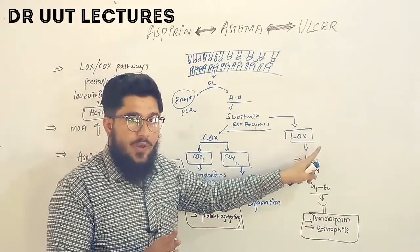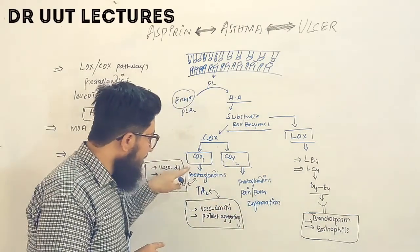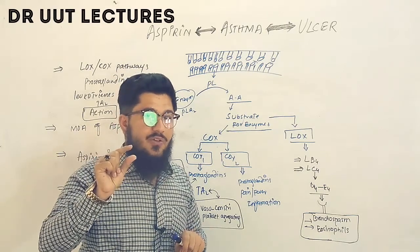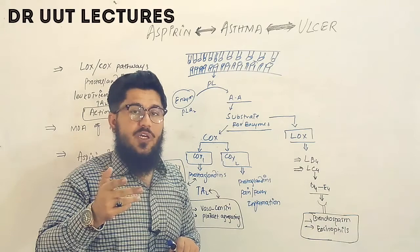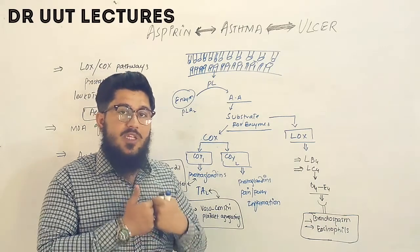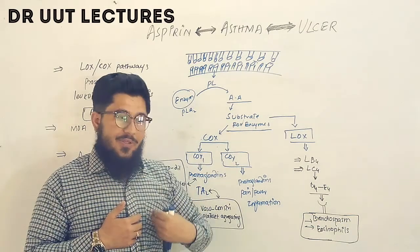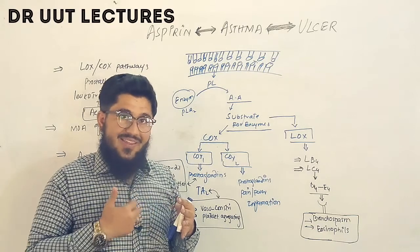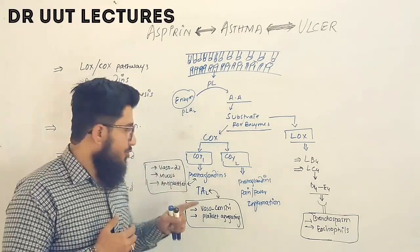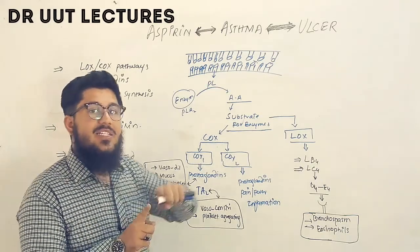The prostaglandins produced through COX-1 are responsible for renal vasodilation, improving blood perfusion to the kidneys. They also stimulate mucus secretion in the GI tract — particularly in the stomach — where this mucus forms a protective barrier against acid. Additionally, COX-1 prostaglandins have anti-platelet activity, acting as an anti-platelet factor.